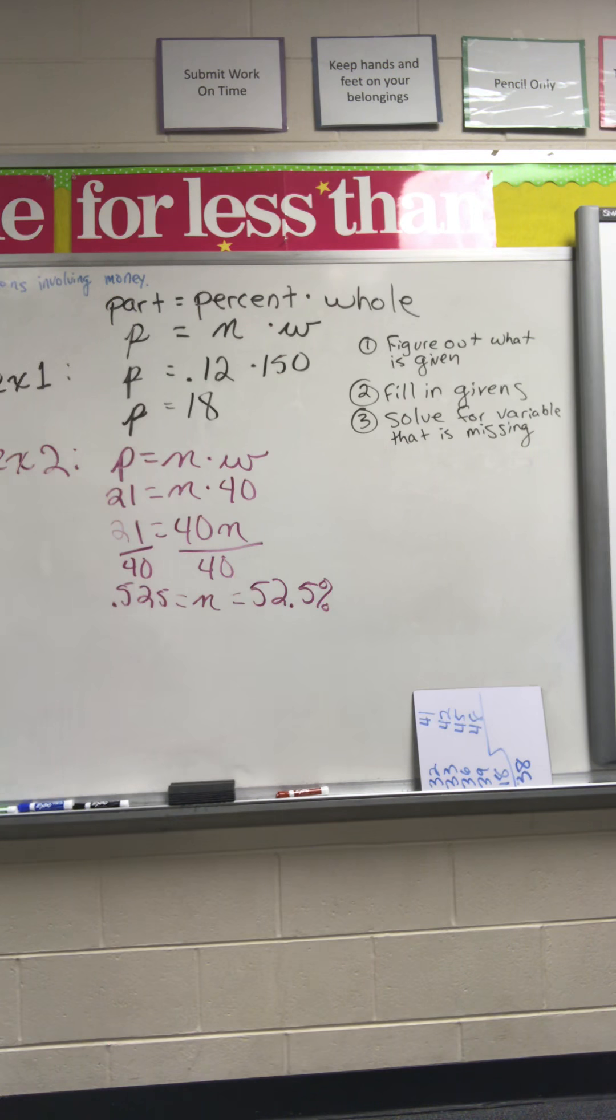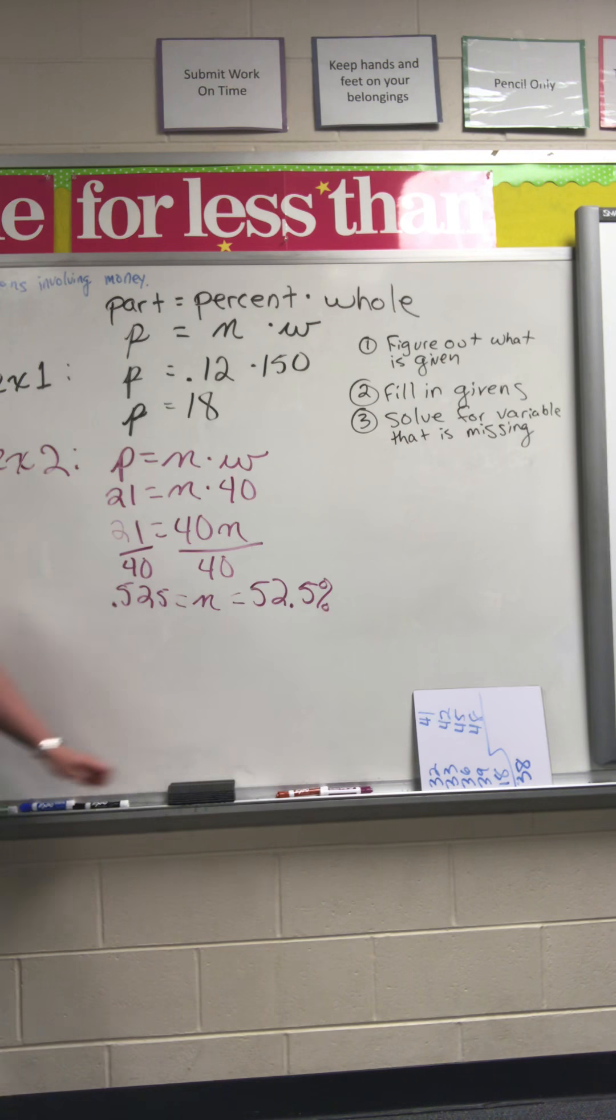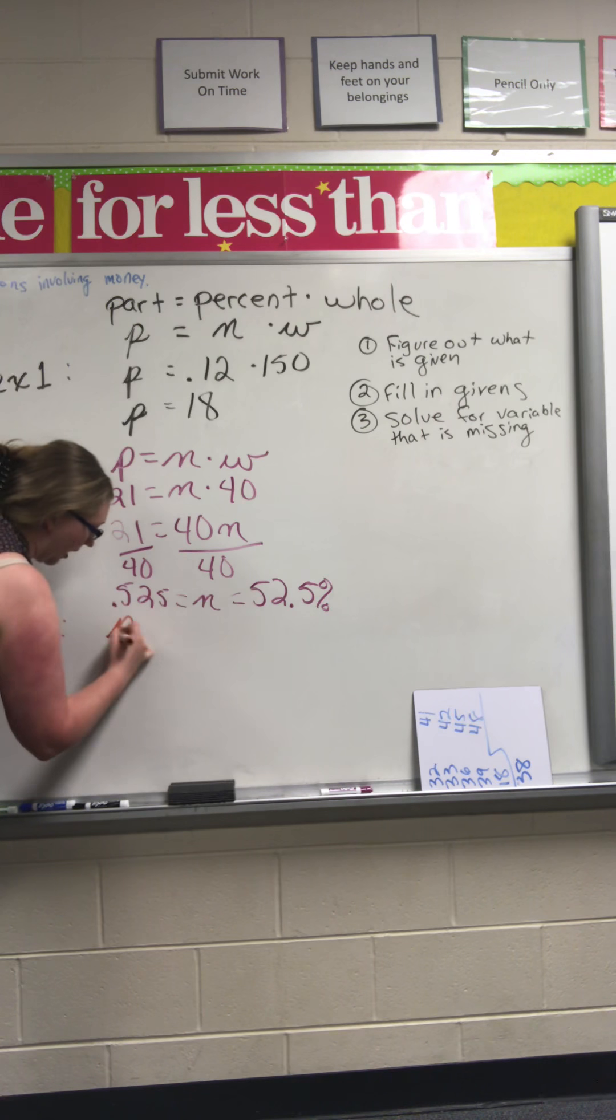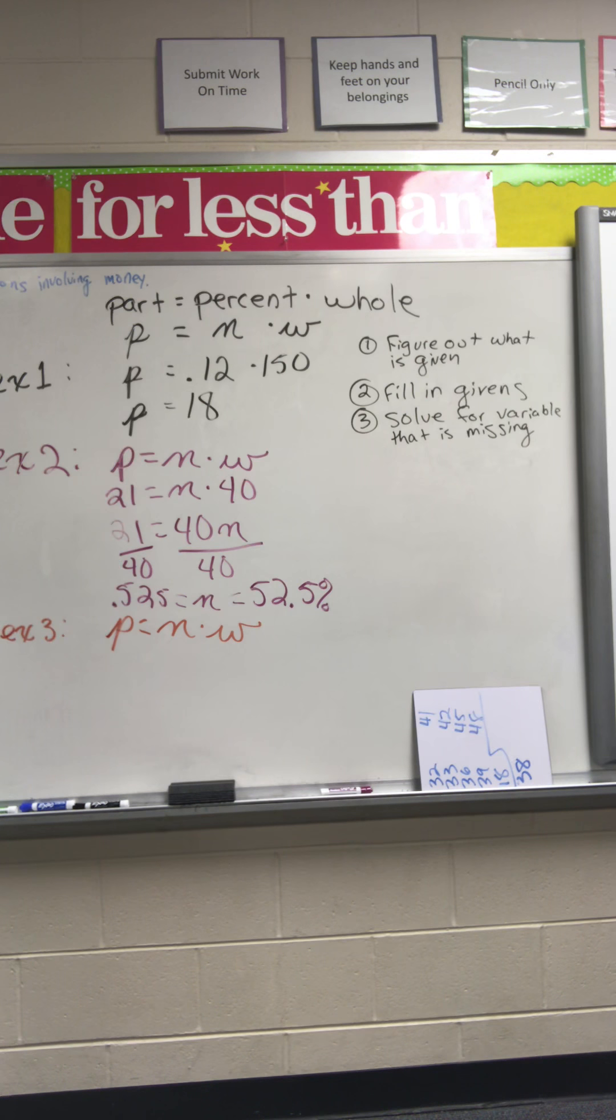Go ahead and sharpen your pencil while we read in our book on page 131, example three. Example three says what? 13 is 26% of what number? So I know that I'm going to have a part that is equal to my percent times my whole. Am I given a part? Yes. What is my part? 13.